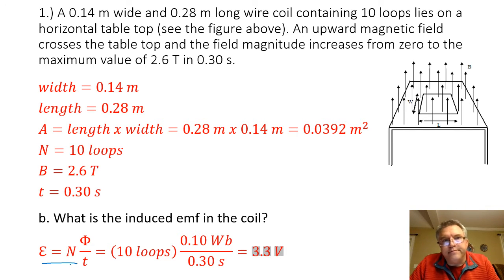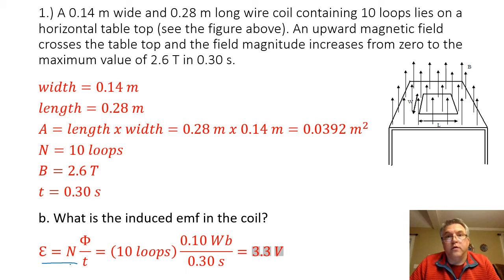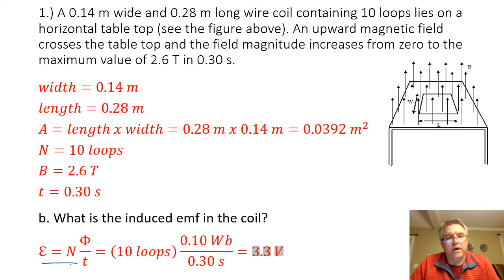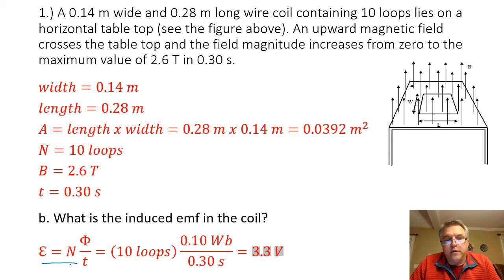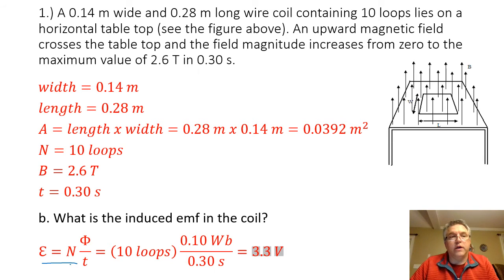That negative sign — we can leave it out. It really just denotes that the induced EMF has a polarity to it, and it goes in opposite directions depending on which way the coil is oriented in the magnetic field. So mathematically, it doesn't change anything, especially at the depth we are going into electromagnetic induction. There are 10 loops, the magnetic flux is 0.10 Weber, and the time is 0.30 seconds. The induced EMF is 3.3 volts.